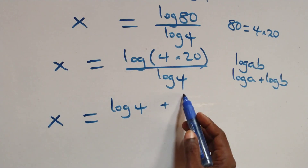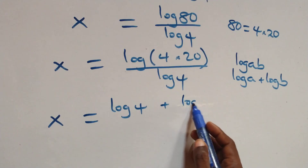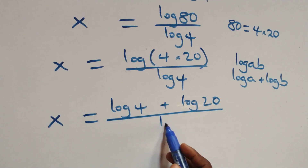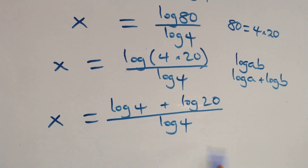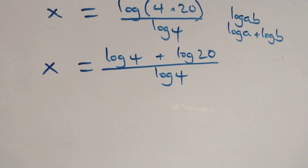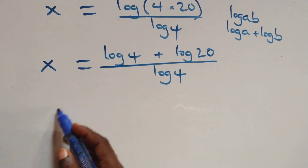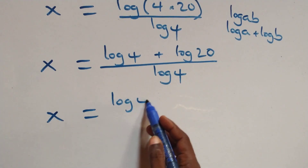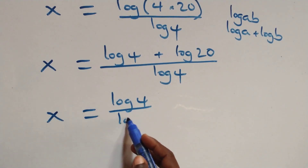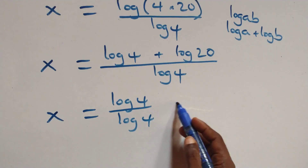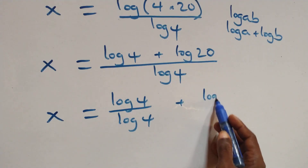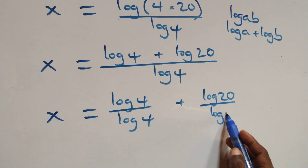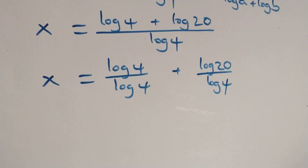We separate into two fractions and have x equals log 4 over log 4 plus log 20 over log 4.